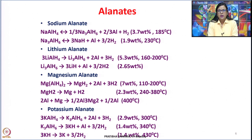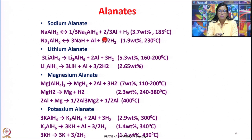These alanates, borohydrides, amides, and imides dissolve hydrogen in a sequence of steps, releasing a certain amount in each step. For example, sodium alanate NaAlH4 can give hydrogen at 185 degrees centigrade, releasing 1 mole of hydrogen and producing Na3AlH6 plus 2/3 Al. This Na3AlH6 can further give 3/2 moles of hydrogen producing NaH at 230 degrees centigrade, giving approximately 1.9 weight percent.